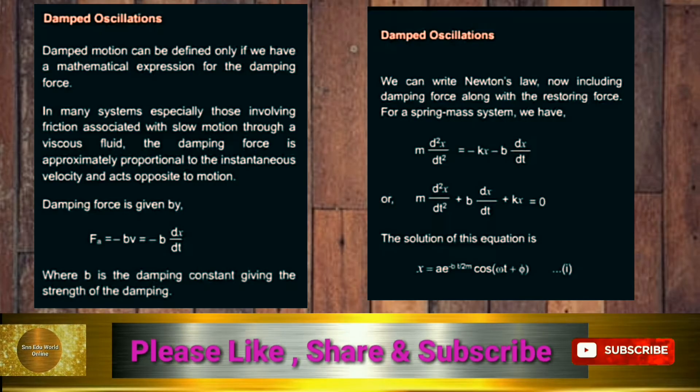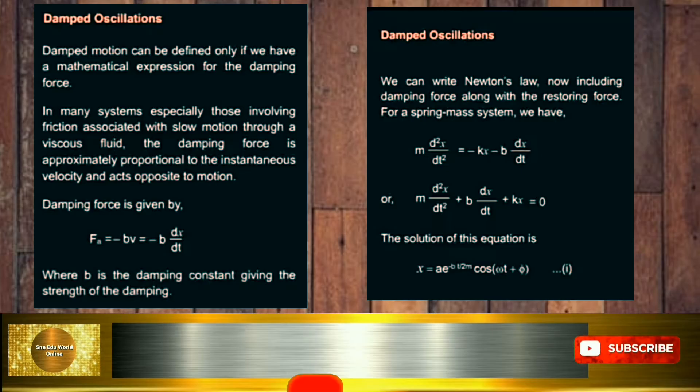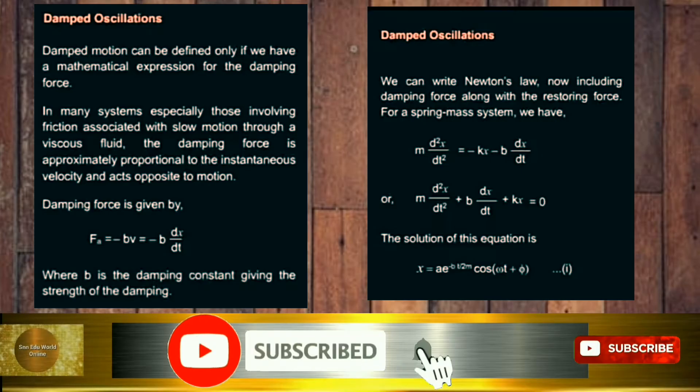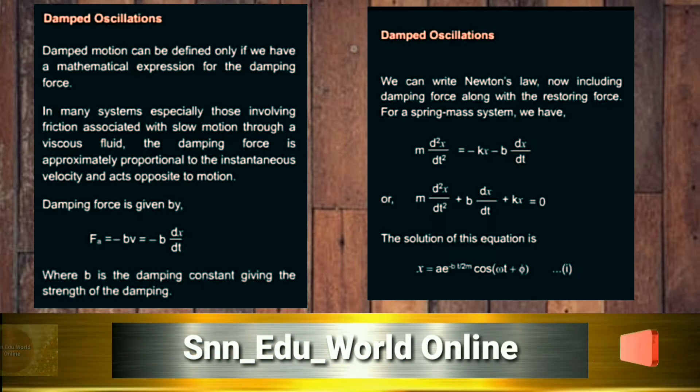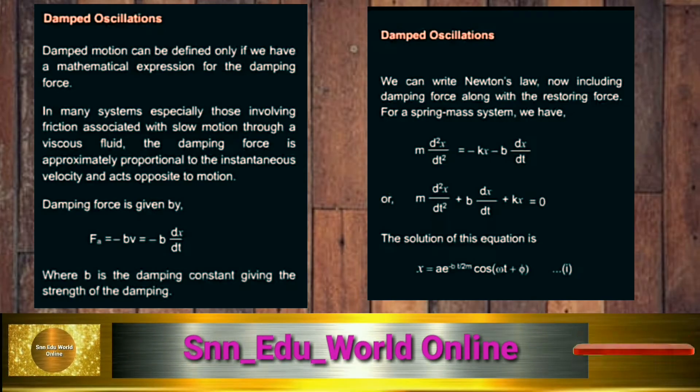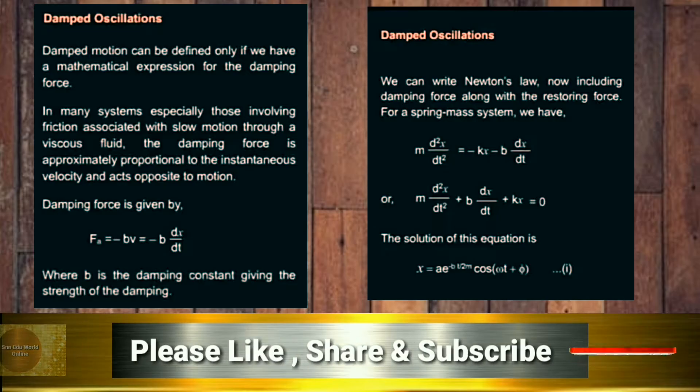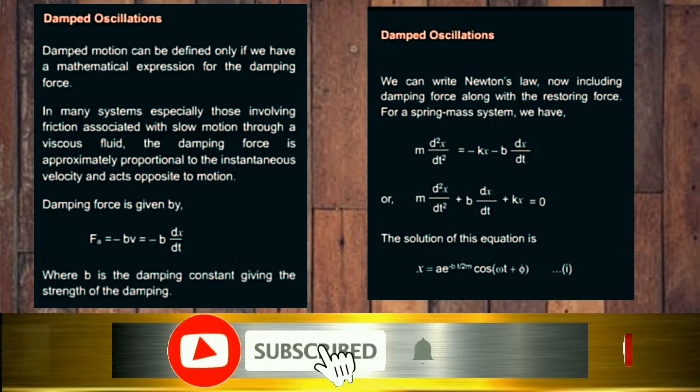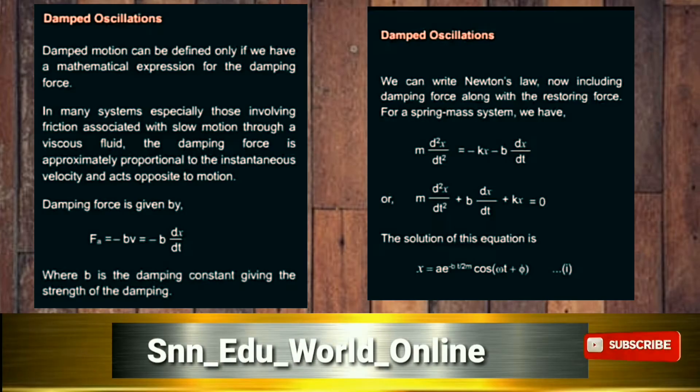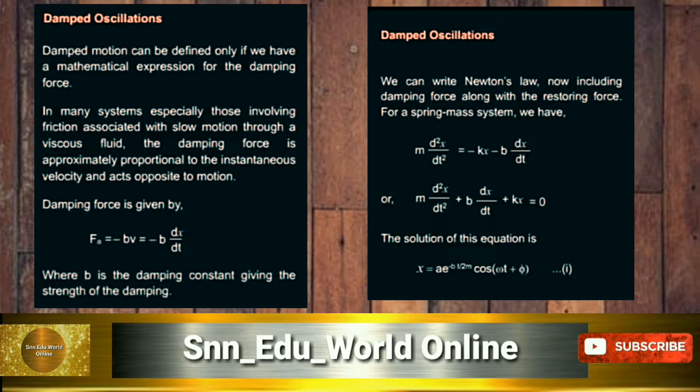We can write Newton's law now including damping force along with the restoring force. For a spring mass system, we have m d²x/dt² = -kx. This is the improved format of harmonic motion. Instead of zero, we now have the concept of minus b dx/dt, that is the damping force.